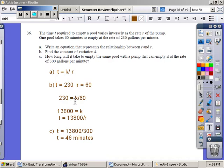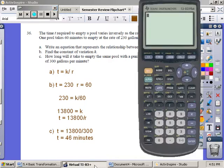230 equals K divided by 60. Since I have a division sign, that means I must multiply. 230 times 60. And I receive 13,800 gallons, which is K, which is the constant.